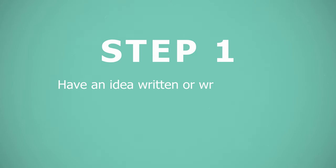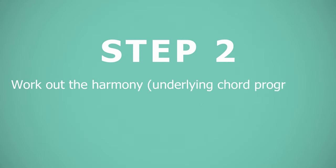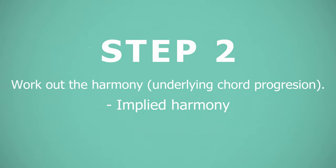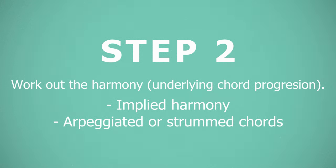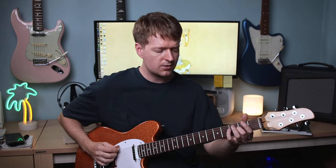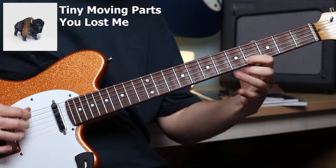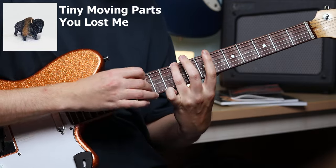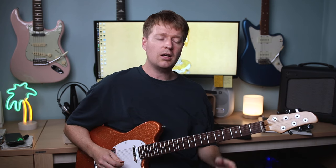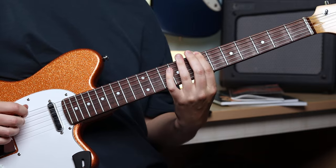Now you know how this process works, here's a step-by-step guide so you can start using this approach right away. First, look at any established idea you've already written, or one you will write. Next, work out the harmony — this could be an implied chord progression from a ringing root note, arpeggiated chords, a chord progression, or a combination of the two. For example, in the song 'You Lost Me' by Tiny Moving Parts, even though that's a riffy style idea, there's an implied harmony going on through those ringing root notes. That can inform what the key is and what chords you could potentially use, and from there you can look at the parallel minor and borrow chords from it.